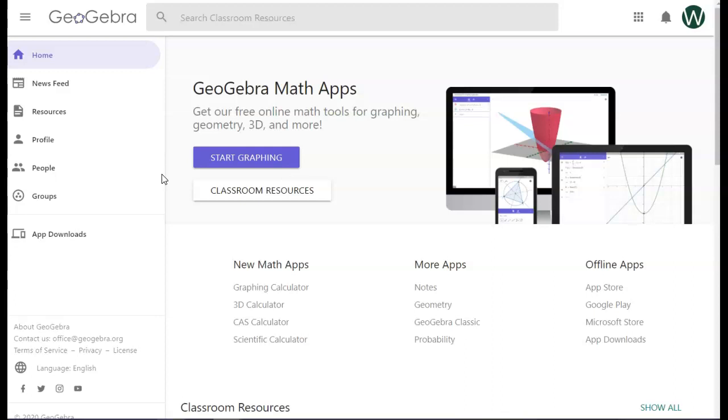And if you haven't created your own account, you want to do that. It's totally free. It's open source. And in geogebra.org on the homepage, we're going to pick the 3D calculator.